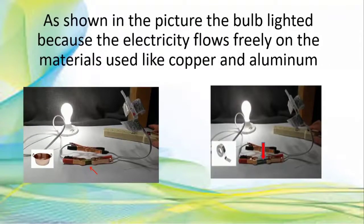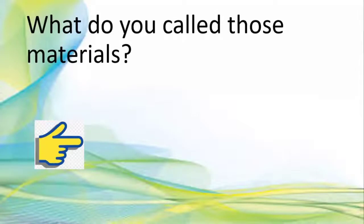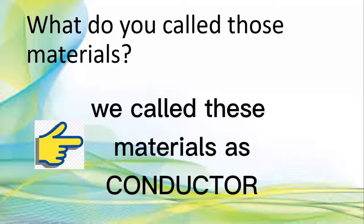As shown in the picture, the bulb lighted because the electricity flows freely on the materials used like copper and aluminum. What do you call those materials? Excellent! We call these materials as conductor.